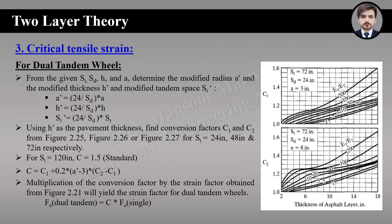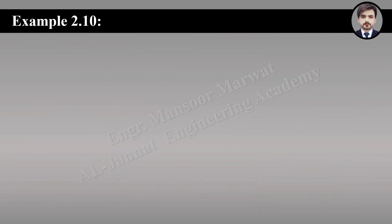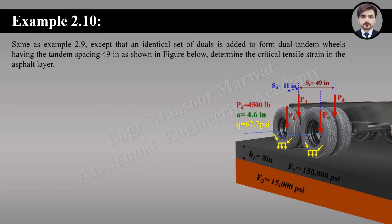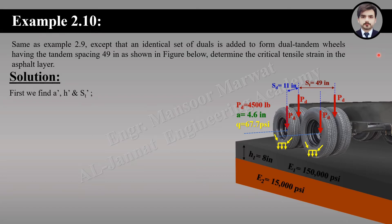Example 2.10 is the same as example 2.9 except that an identical set of dual tires is added to form dual tandem wheels with a tandem spacing of 49 inches. Determine the critical tensile strain in the asphalt layer. The tandem spacing of 49 inches means the center-to-center spacing between the two axles is 49 inches. The first step is to find the modified radius, modified thickness, and modified tandem spacing.